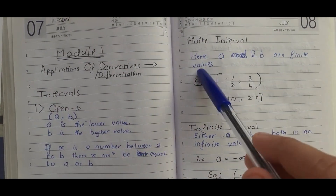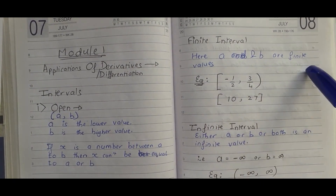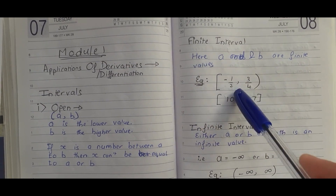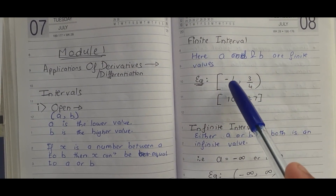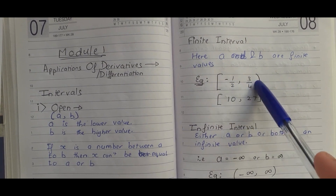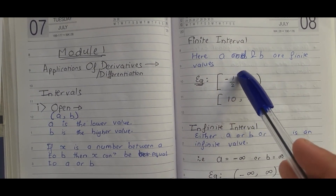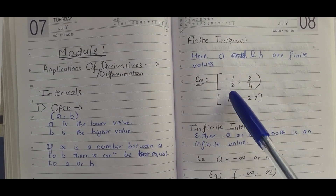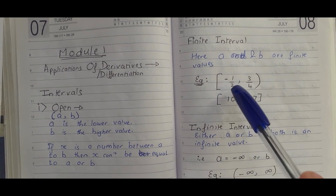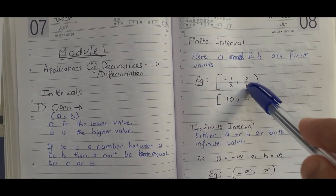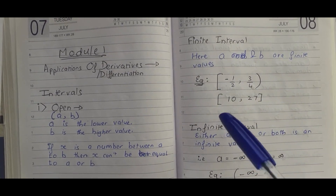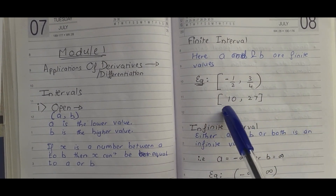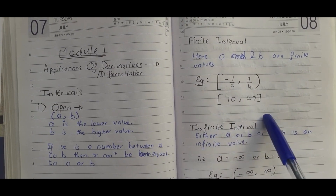Then you have a finite interval, which is when A and B have finite values. For example, closed interval minus one-half comma three-quarters open interval means the function includes minus one-half but excludes three-quarters. This example shows that an interval can have a negative value as well as a decimal value. Another example with two closed intervals is [10, 27].